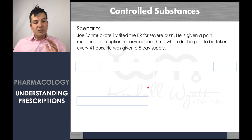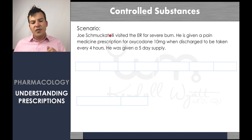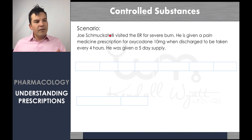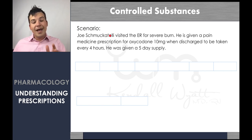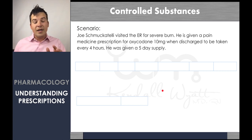Let's look at a controlled substance example. Joseph Schmucatelli visited the ER for a severe burn. He's given a pain medication prescription for oxycodone 10 milligrams when discharged, to be taken every four hours. He was given a five-day supply. If you want to write that down and try to fill in all the pieces, now's a good time to pause. Here are all the pieces — the recipe — that goes along with the beginning of the video.